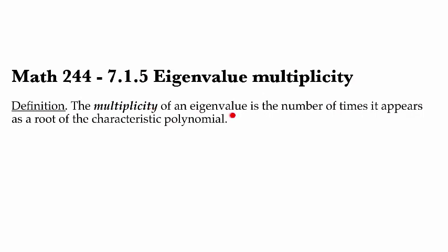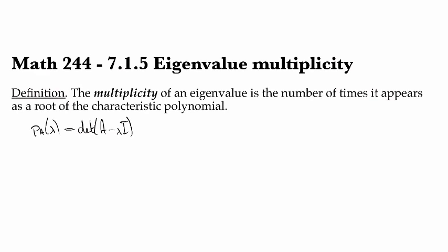The multiplicity of an eigenvalue is the number of times that it shows up as a root of the characteristic polynomial. If you remember, the characteristic polynomial of the matrix A is P_A, the determinant of A minus lambda I. This is a polynomial that can have whatever degree, and it's possible that you might have a term in there that's squared or cubed or something like that, and that means that you have an eigenvalue of higher multiplicity.